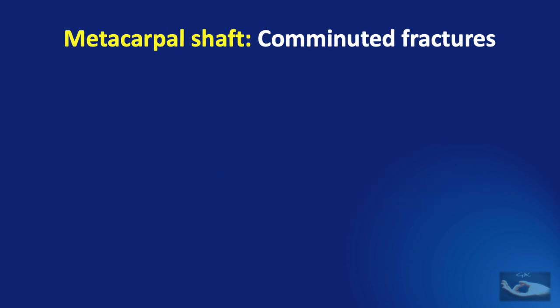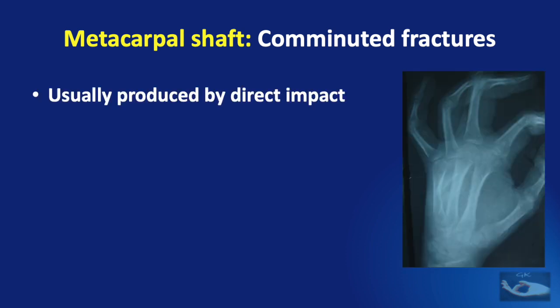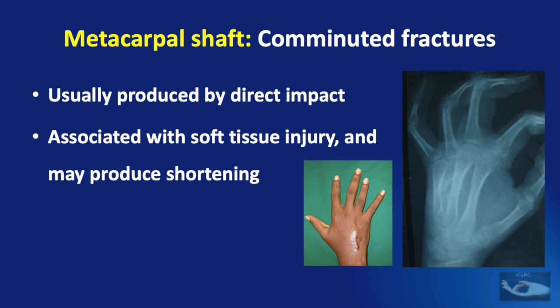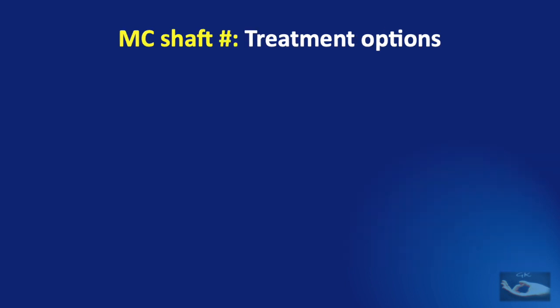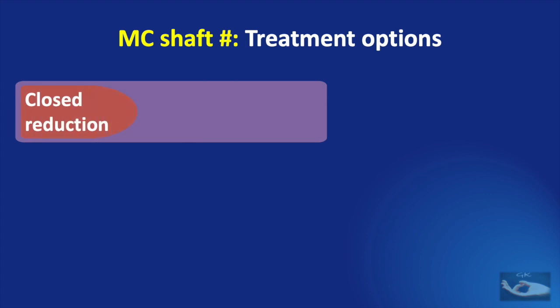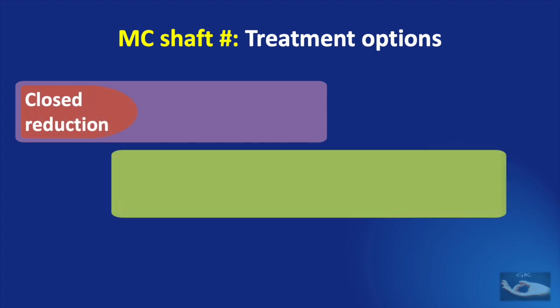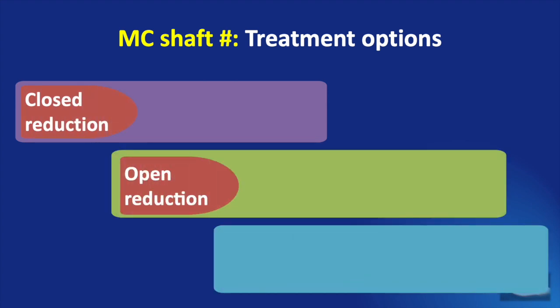Comminuted fractures of the metacarpal shaft are usually produced by direct impact. They are associated with more soft tissue injury and may produce more shortening. The treatment of metacarpal shaft fractures can basically be divided into closed reduction methods, open reduction methods, and external fixation.